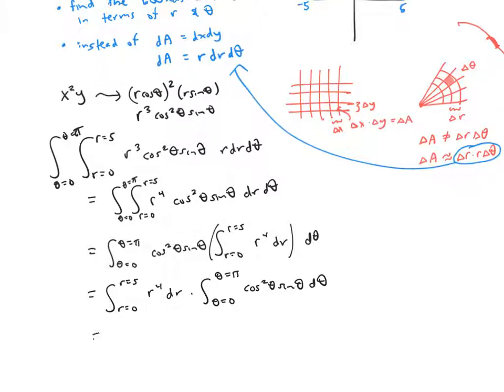To compute the integral of r to the fourth dr, I just get r to the fifth over five. And I can compute the integral of cosine squared theta sine theta d theta by doing a u substitution. I'll let u be cosine theta. So du is negative sine theta d theta. And I'll go ahead and convert the bounds of integration as well.